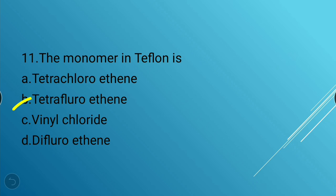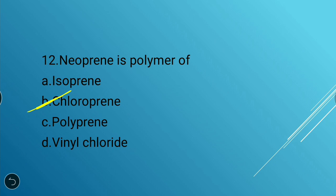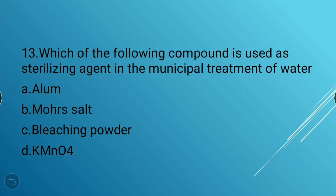Next question: Neoprene is a polymer of which monomer? Options: isoprene, chloroprene, polypropylene, vinyl chloride. The answer is chloroprene — neoprene is a polymer of chloroprene.